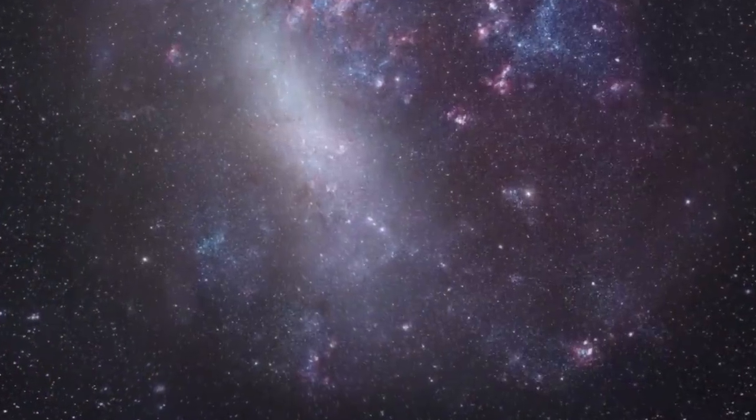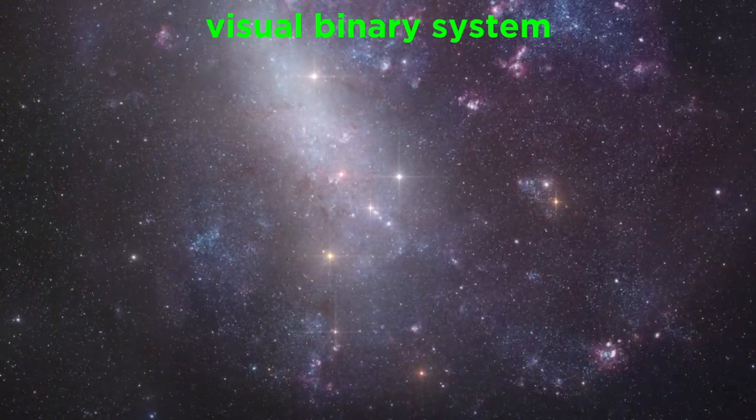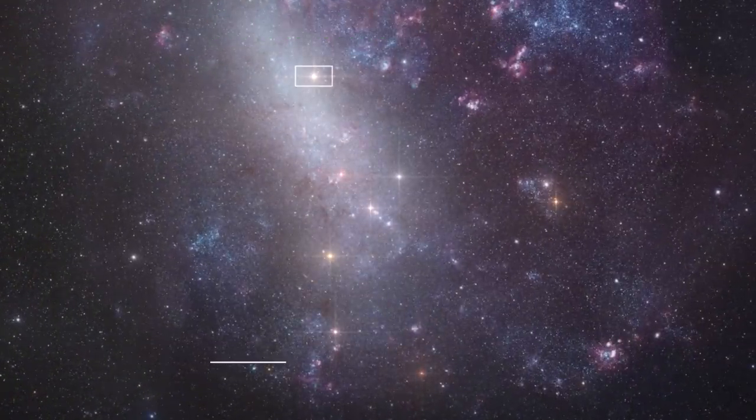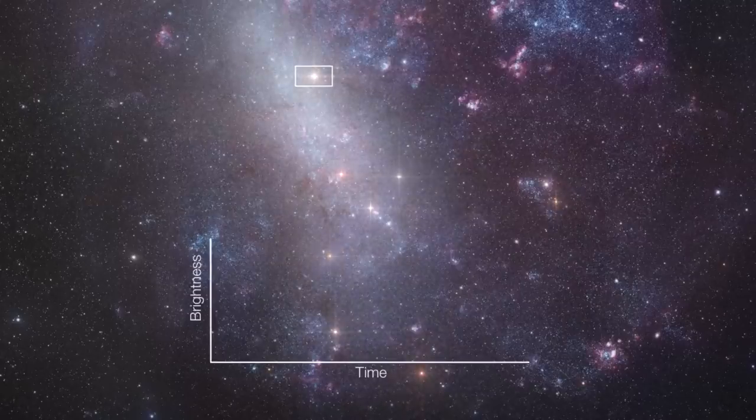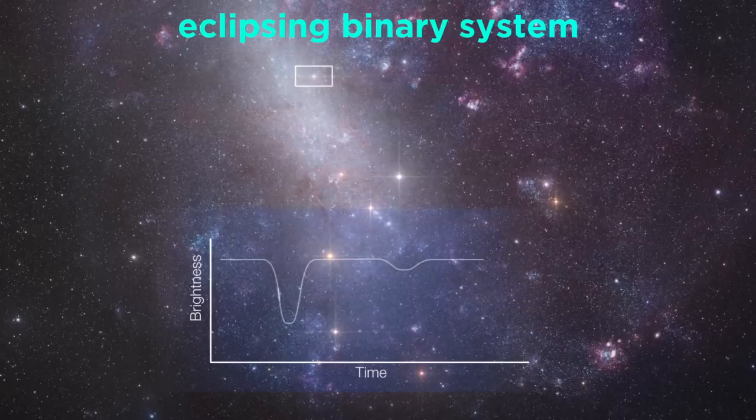When we can see both of the stars, they are called visual binaries. And if the plane of their orbit happens to coincide with our line of sight, such that they pass in front of each other, they are called eclipsing binaries.